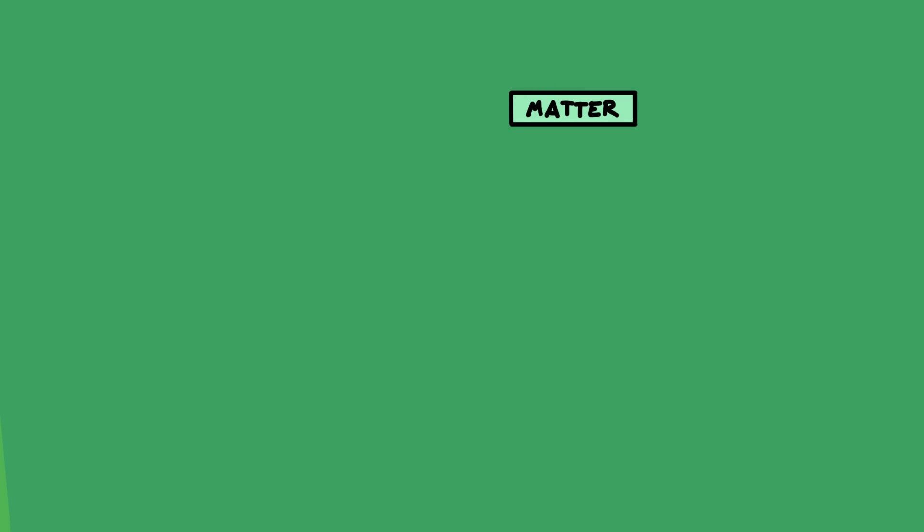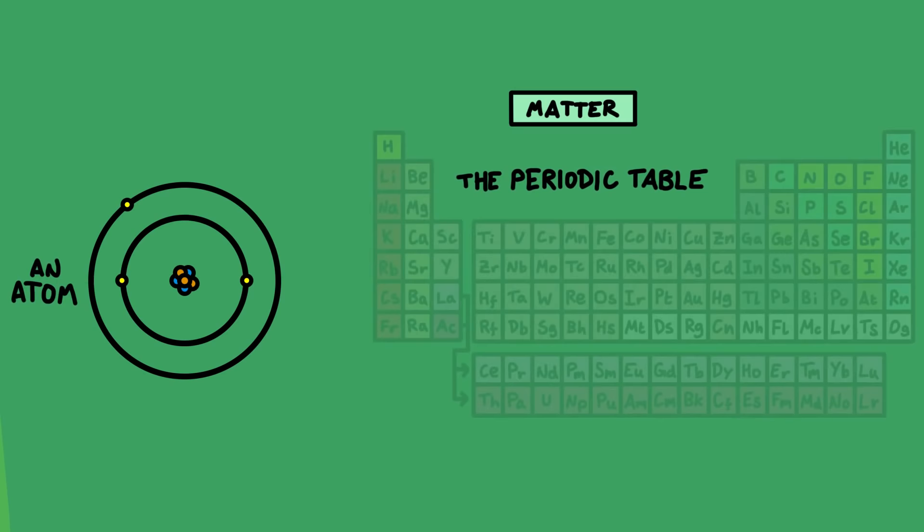First there's matter, and all the different things that matter is made of. At the very smallest scale we start with atoms, and the periodic table that organizes all of the different types of atoms, called chemical elements.